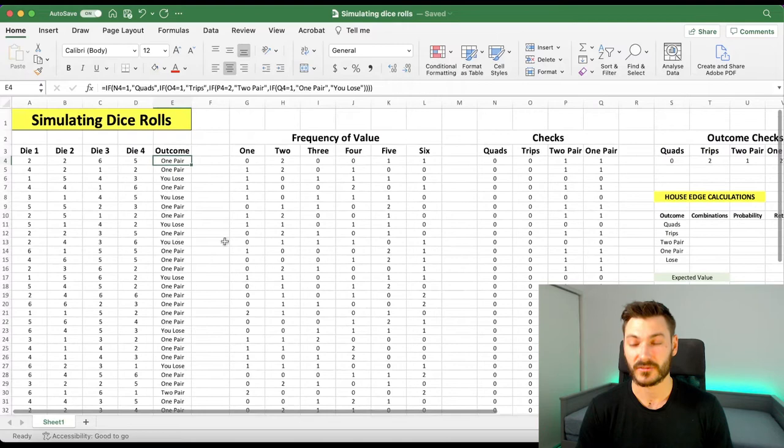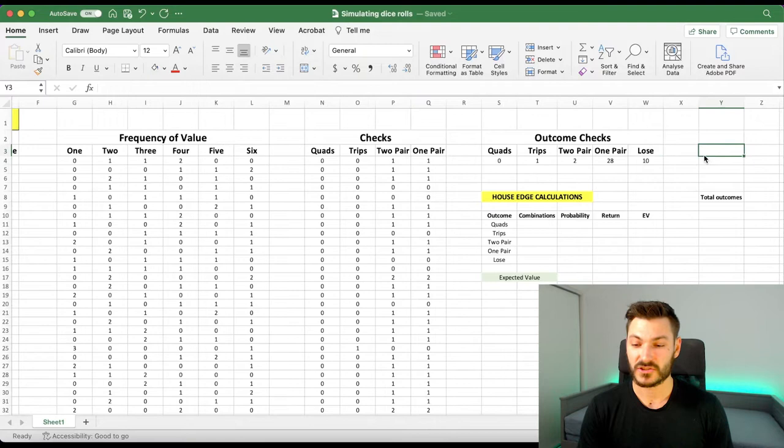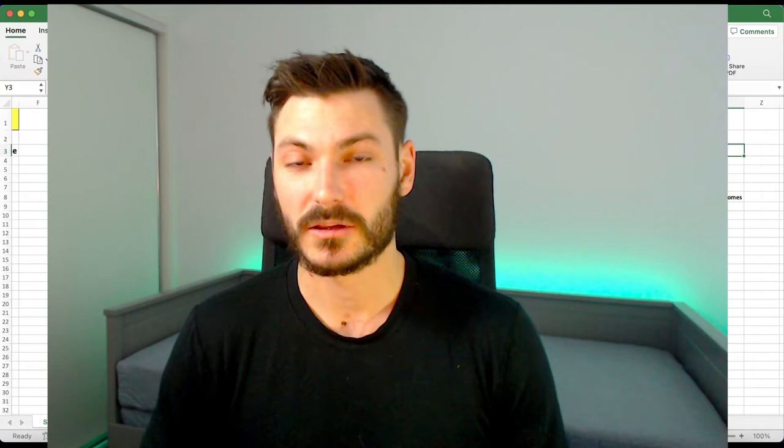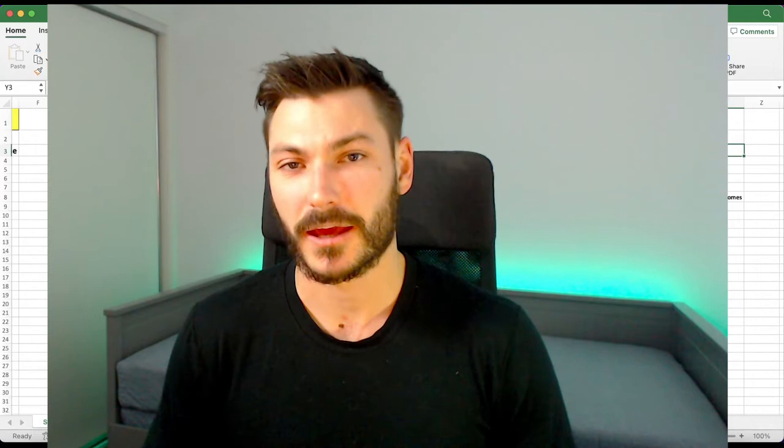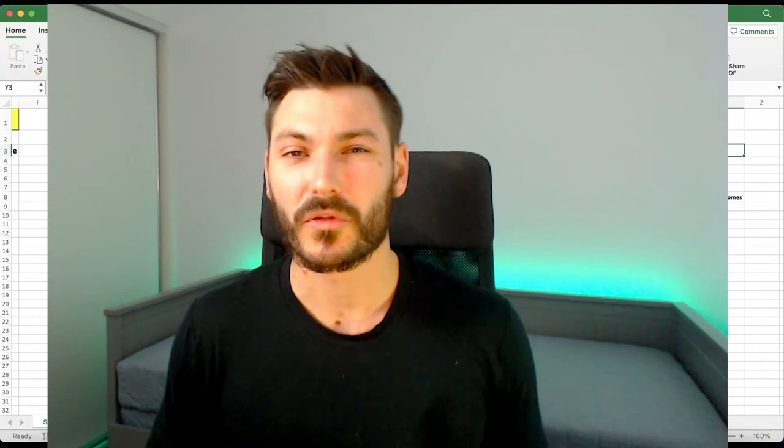I believe there were 41 different outcomes from the dice rolls which we simulated. As we hit delete on our Excel spreadsheet, it regenerates those outcomes. Now, in today's video, we're going to be looking at figuring out the theoretical edge for the casino based on our game. We're going to try and make it small, but not too small because we want profit, but we also want the game to be relatively interesting and fun so that people would play it.